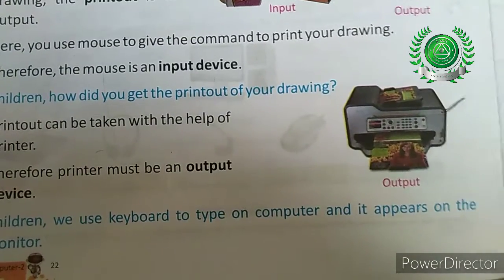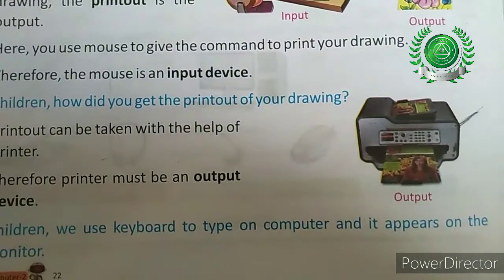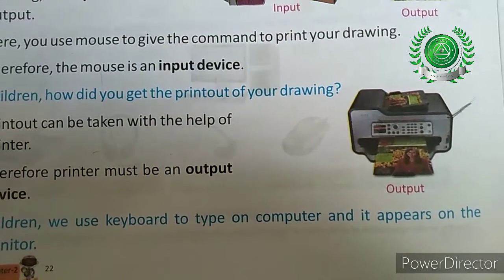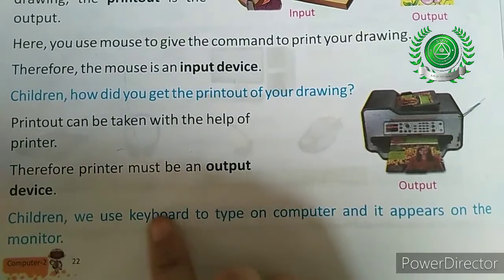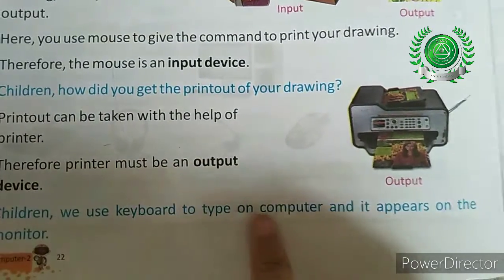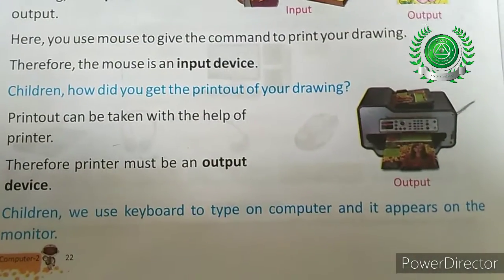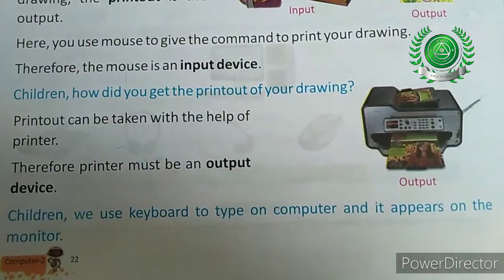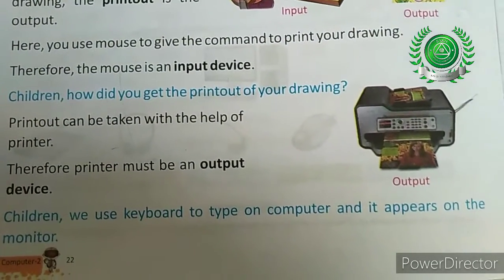The work is the input and the result of your work is the output. Children, we use the keyboard to type on the computer and it appears on the monitor. The keyboard is your input device because what you do on the keyboard is you type.